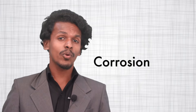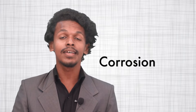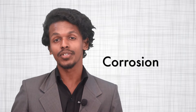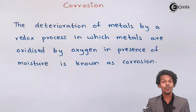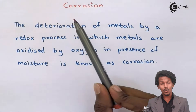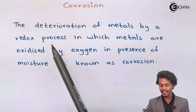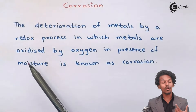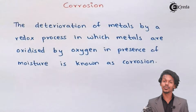Hello friends, now we are going to talk about a new concept known as corrosion, which is under an electrochemical reaction. Corrosion is nothing but the deterioration of a metal by a redox process, in which the metals are oxidized by oxygen in the presence of moisture.